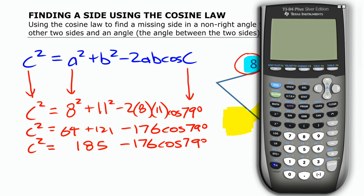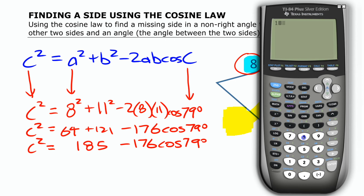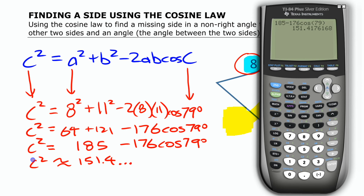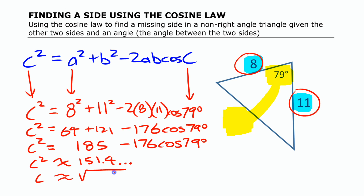Let's get our calculator. Make sure it's in degree mode. We're going to put all of that in: 185 minus 176 cosine 79. We get an approximate value of roughly 151 point something. So C squared is roughly 151.4. If we're going to find what C is, we need to do the square root of that value. Using the previous answer feature on the calculator, we get that the missing side C is roughly 12.3.